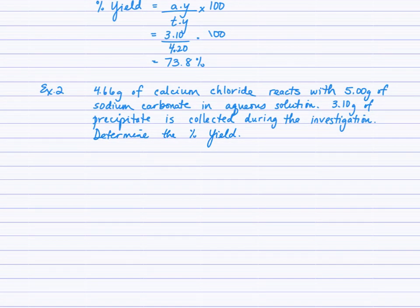In example two, there's a little more work to do. The goal is the same — determine the percent yield. 4.66 g of calcium chloride reacts with 5 g of sodium carbonate in aqueous solution, and 3.10 g of precipitate is collected during the investigation. As you read this question, you can see a chemical change is occurring, so start with a balanced equation, list your givens, and map out the problem.